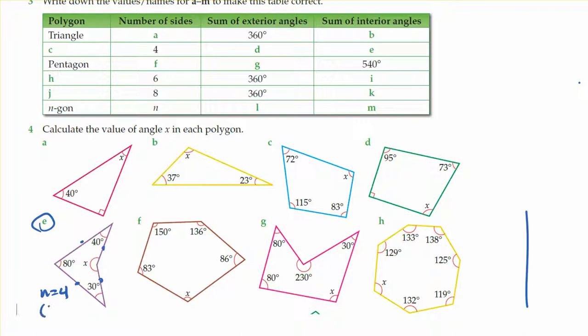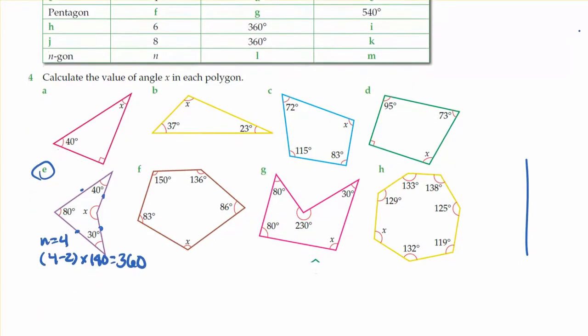So I would use my rule. Instead of n, I'll write 4 minus 2 times 180 equals 360. So I know inside of that shape, I'm supposed to have 360 degrees.